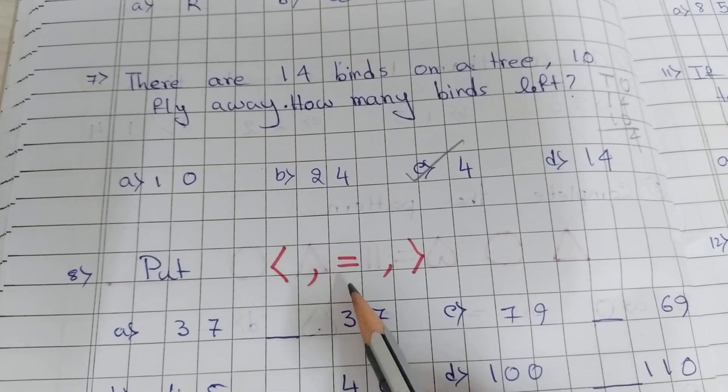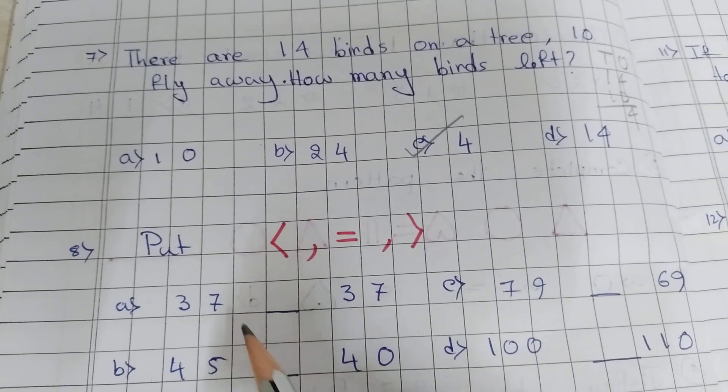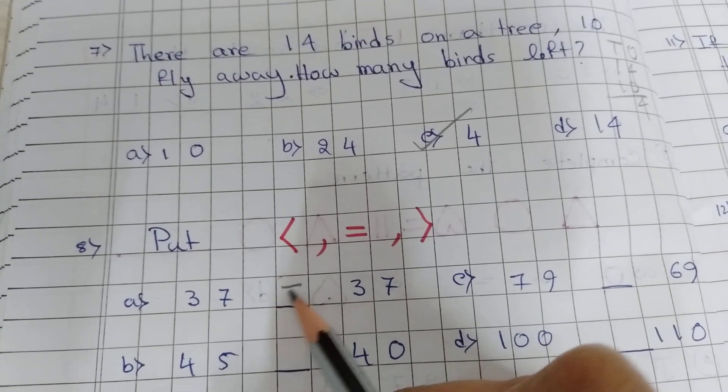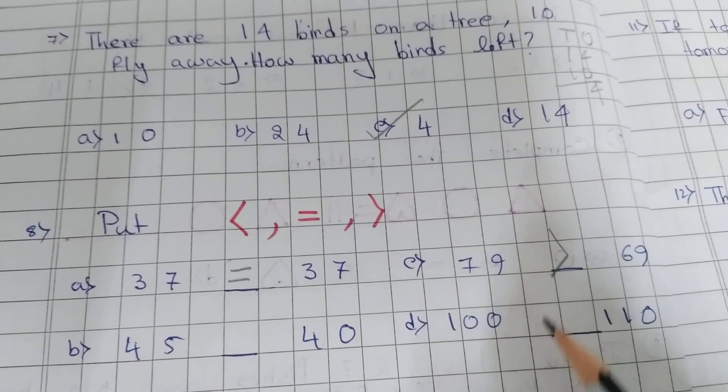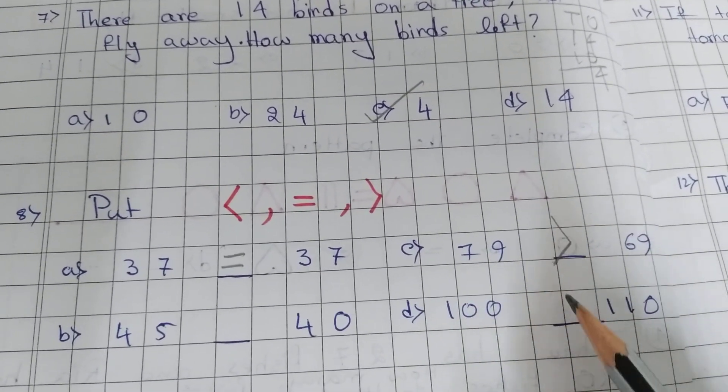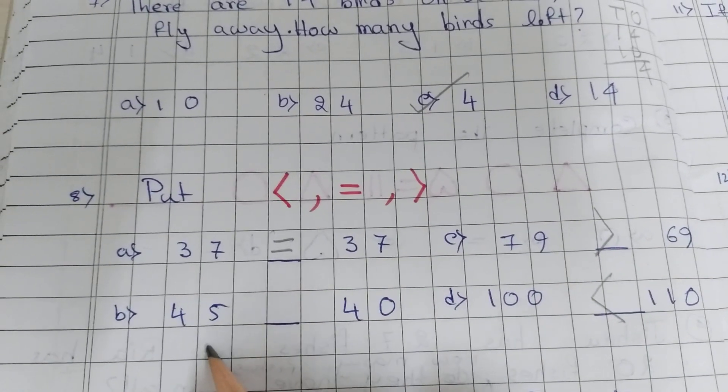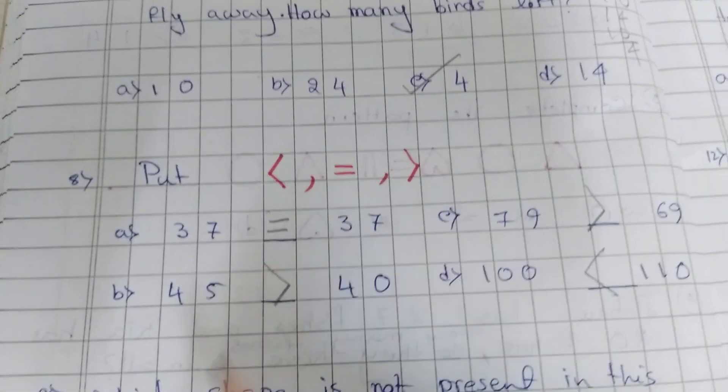Put greater than, equal to, or smaller than sign. 37, it will be equal. 79, 69 greater than. 100, 110 smaller than. 45, 40 greater than.